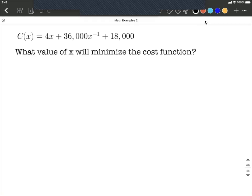So to get going on this, the first thing we want to do is calculate the first derivative. From our cost function, we're going to use the power rule a couple times. On that first term, the 4x, its derivative is going to be 4. The next term, the 36,000 times x to the negative first power, we're going to bring the exponent down, multiply it by the 36,000, and reduce the exponent by 1. So that'll go negative 1 minus 1 more makes negative 2. And then the derivative of 18,000, a constant, is just going to be 0.